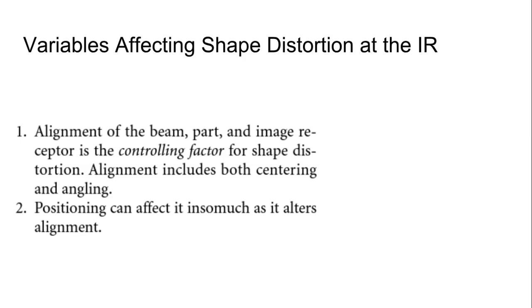Or the image receptor itself is not parallel to the part, which doesn't happen as often, but it is possible. All of those would cause either foreshortening in the case of the part being angled and the image receptor, and the beam being angled would cause elongation. All those are forms of shape distortion.